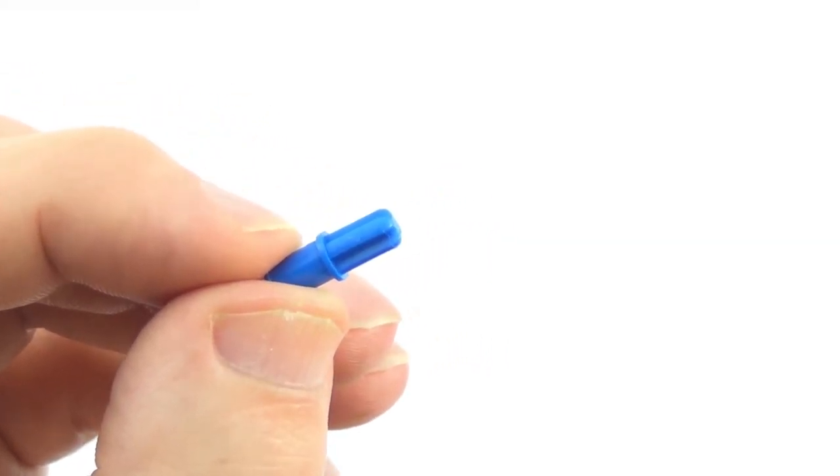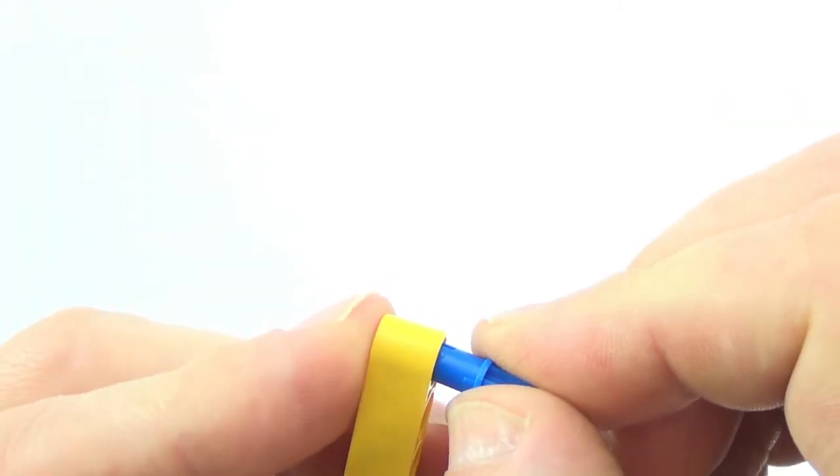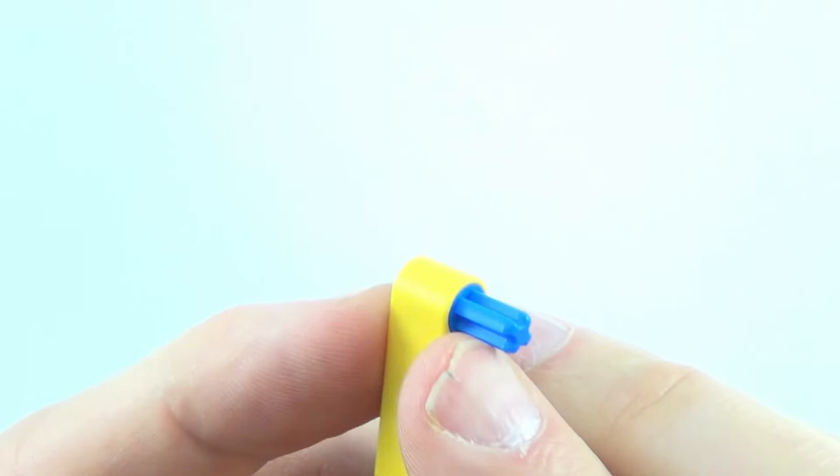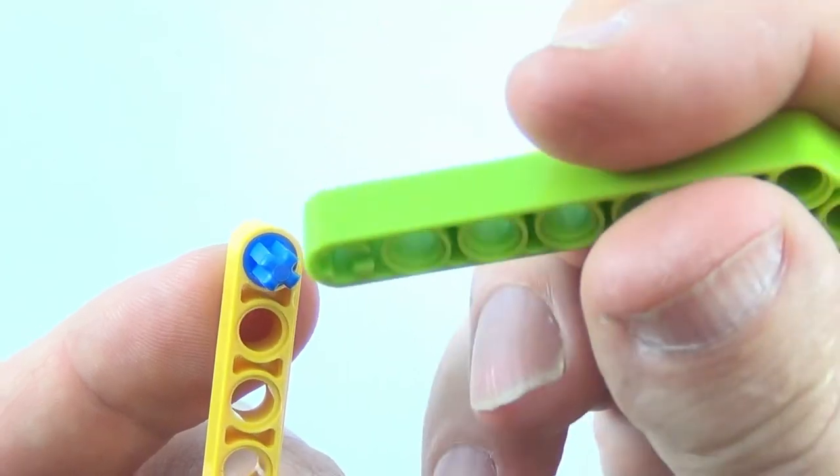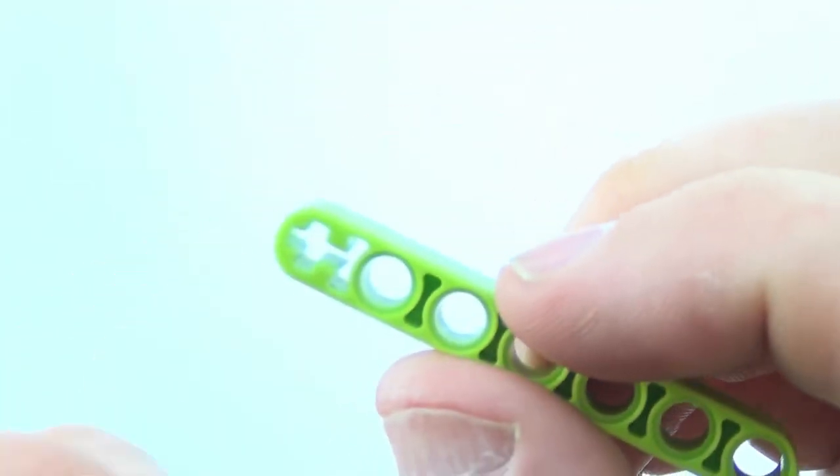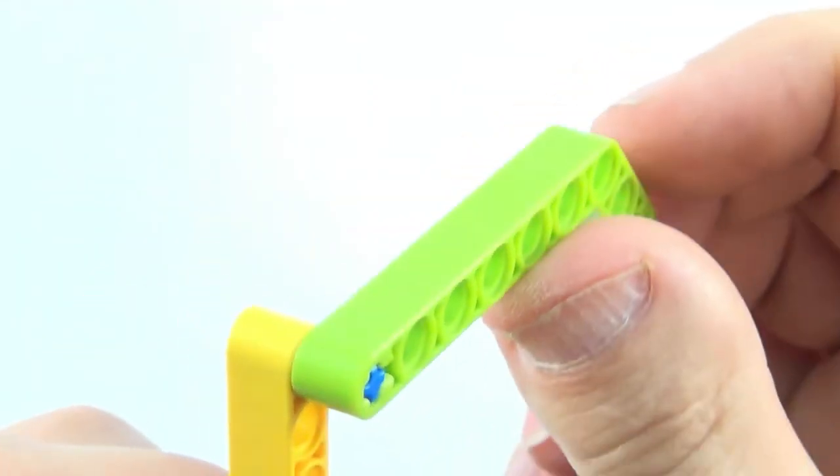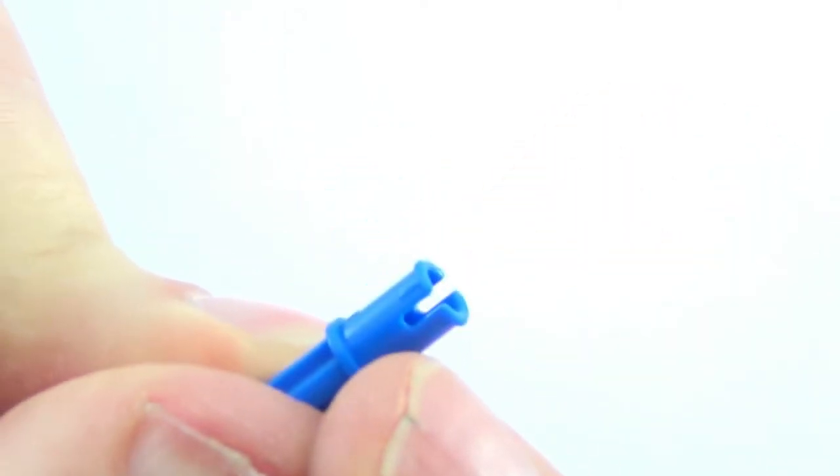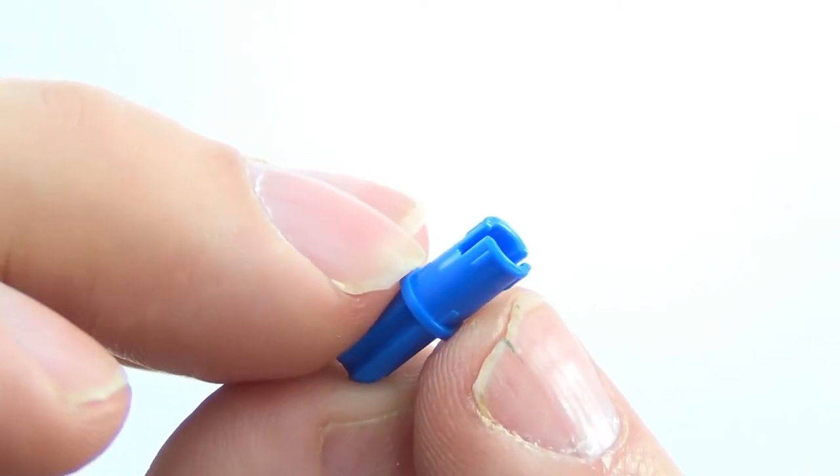A Technic axle pin allows us to put the pin end into a lift arm or beam. But because this is an axle on this end, if I put it into another beam, it is just going to fall out. But we can actually put the axle end into the axle end of the lift arm. The blue pin does have friction ridges, which makes the build quite strong and sturdy.